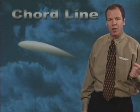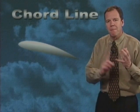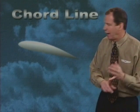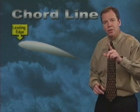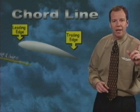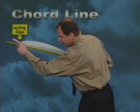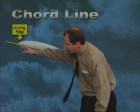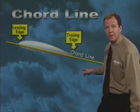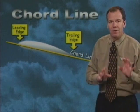This next term we call the chord line. The chord line is the imaginary line that is drawn from the leading edge to the trailing edge of the wing. Leading edge, trailing edge, and that line right through it — that's called our chord line.